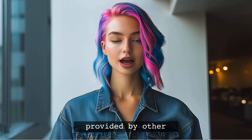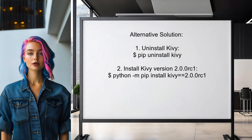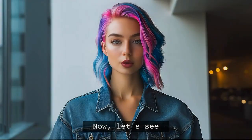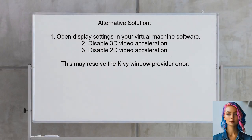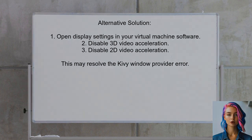Let's look at answers provided by other users. One user faced the same issue and found success by uninstalling and reinstalling Kivy — they suggest using pip to uninstall Kivy first, then installing a specific version. An alternative solution from another user suggests disabling both 3D and 2D video acceleration in the display settings of your virtual machine software, like VirtualBox or VMware.